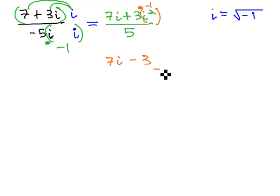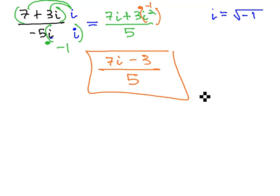We have 7i minus 3 over 5 for our final rationalized solution.